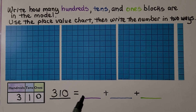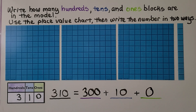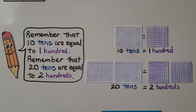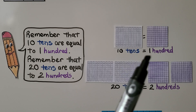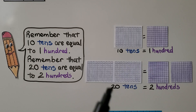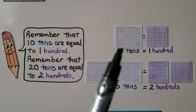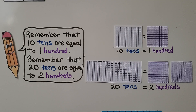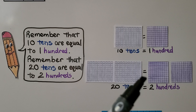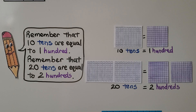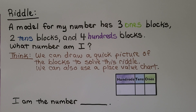We can also write it another way: three hundred plus ten plus zero ones. Remember that ten tens are equal to one hundred — we're just squeezing those tens together to make a flat of one hundred. And twenty tens are equal to two hundreds.